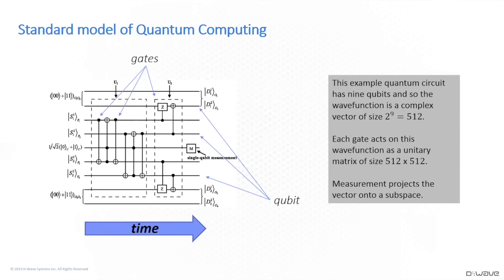If you count up the gates in this little circuit, there are about 10 gates. That means you're taking this initial vector and multiplying it sequentially by 10 big matrices of size 512 by 512. At the end, you get one final vector, and then you make some measurement on it. This is the circuit or gate model of quantum computing, which had emerged by around the early 90s.